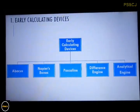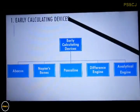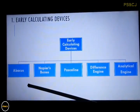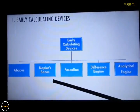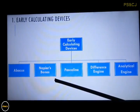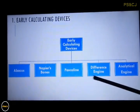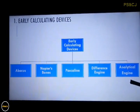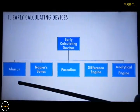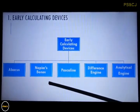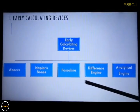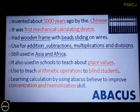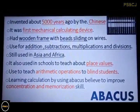Dear students, early calculating devices are: Abacus. Can you please read with me? Pascaline, Difference Engine, Analytical Engine. Once again: Abacus, Neper's Bone, Pascaline, Difference Engine, and Analytical Engine.